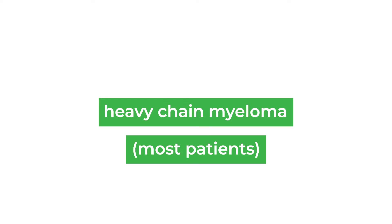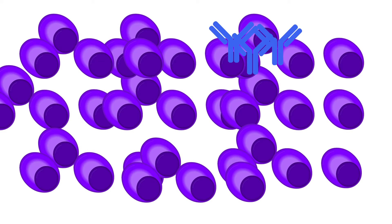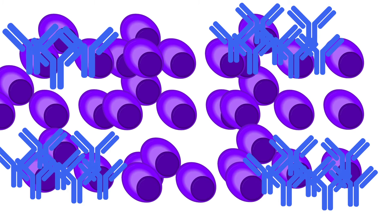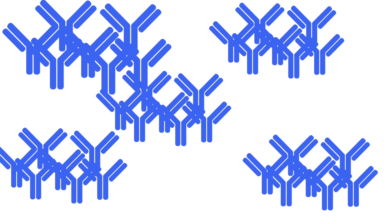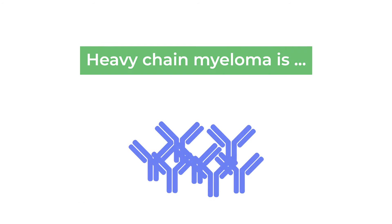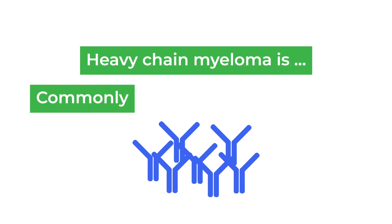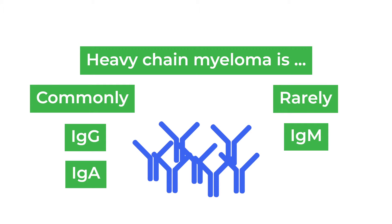The majority of patients have what we call heavy chain myeloma, where we can see a specific type of immunoglobulin or antibody being secreted in very large amounts. What's unique about multiple myeloma is every cancer cell is making the exact same protein, so we can identify and quantify it. The heavy chain is most commonly IgG, but it can also be IgA, and rarely IgM or IgD.